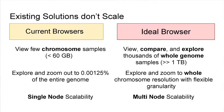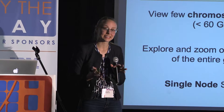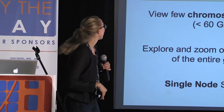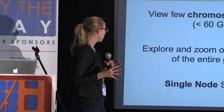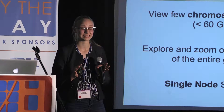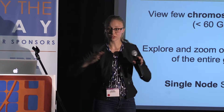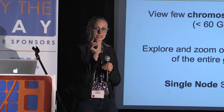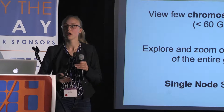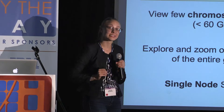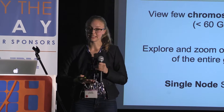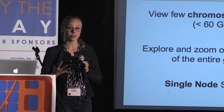There are current genome browsers that allow you to visualize genomic data, but the main problem is that they don't scale. Today's genome browsers can view a few chromosome samples at a time — about 60 gigabytes — and can only zoom to about 0.00125% of the entire genome. They only provide single-node scalability, so with three petabytes of TCGA data that can't fit on a single computer, we run into a problem.